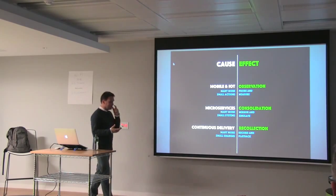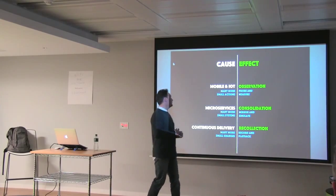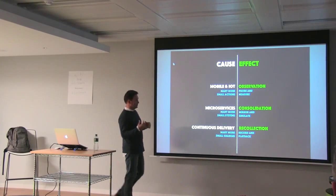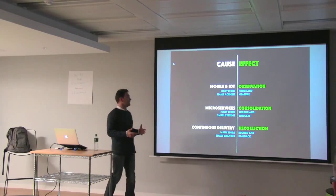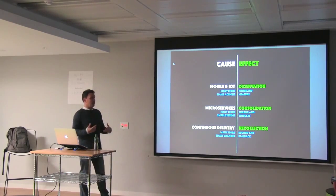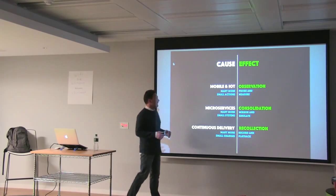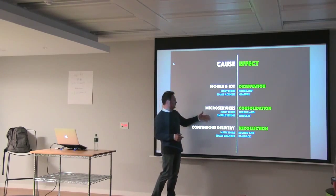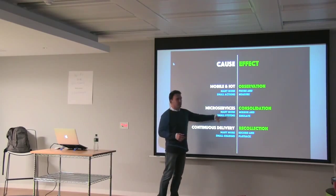That's some of the context, and you need a driver for this great vision. There are some drivers to that state. We have this mobile Internet of Things, and that has many more small actions happening, small interactions with systems. And what we need is better observation and measurement of that. The microservices trend is great — we're trying to get greater modularity, both at real time as well as at design. And we have many more small systems.